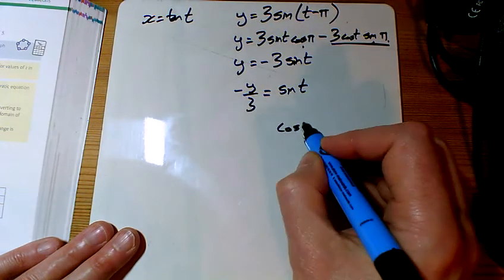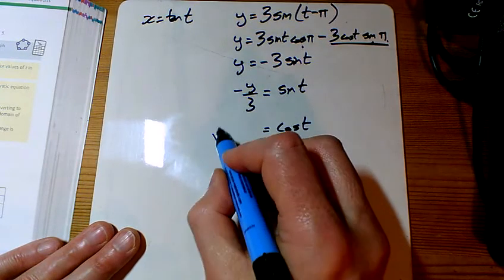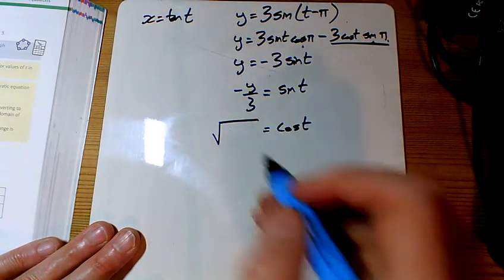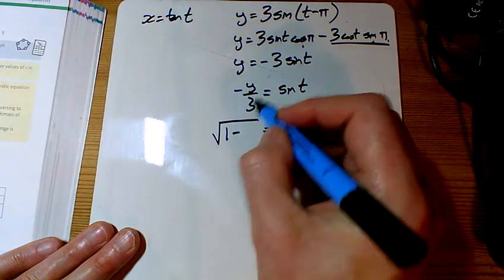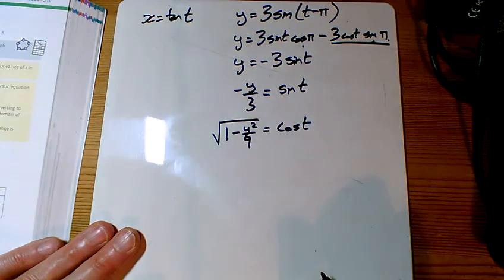And of course, cos squared is 1 minus sine squared. So if I want to find out cos, it's 1 minus this thing squared. So 1 minus y squared over 9.